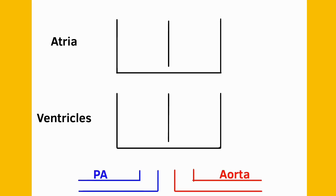Let's start off with the cardiac cycle, which is a series of continuous events happening when the heart chambers are being filled with blood and when the heart contracts. Understanding these events makes it easier to read a normal pressure volume loop and also the abnormal ones.